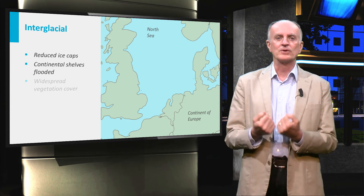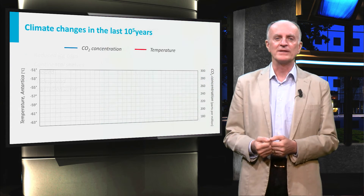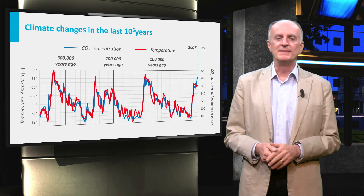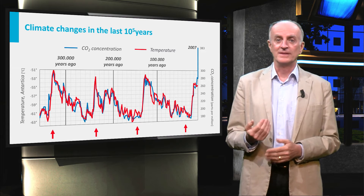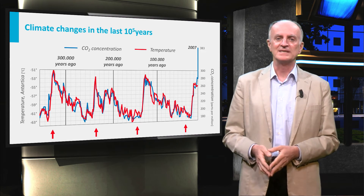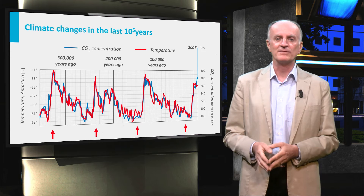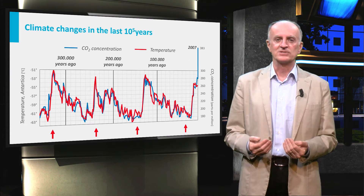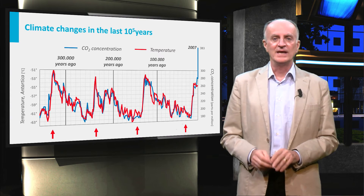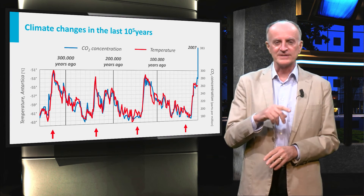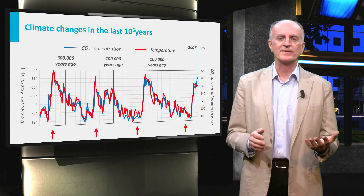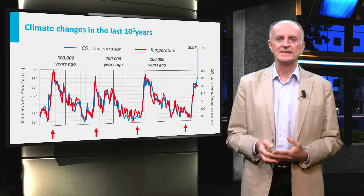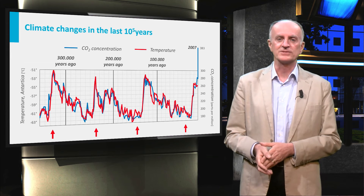Let us now look in more detail at the changes shown by the curves. At the right-hand side of the diagram, you see a major increase in CO2. This increase has been associated with the beginning of the Industrial Revolution and is considered the driver of climate change. Looking at the remaining part of the diagram, up to 300,000 years ago, it is clear that major changes have taken place in CO2 and therefore temperatures.